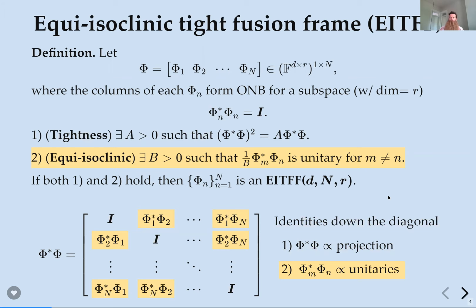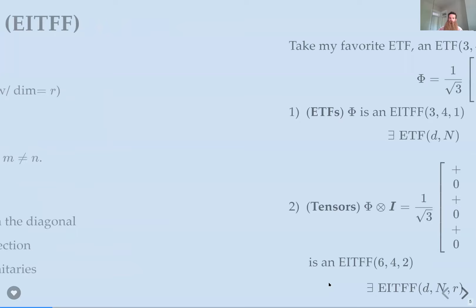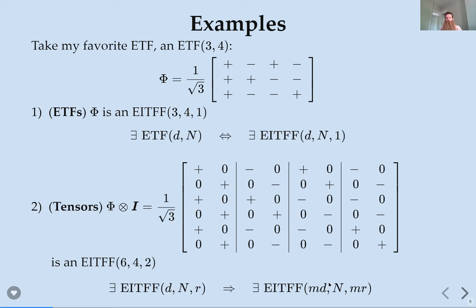I want to build these objects — I can either build the short fat matrix directly or build the Gram matrix and decompose it. Let me show some examples. I'll start with my favorite ETF, the ETF(3,4) — four vectors in three-dimensional space. The totally trivial observation is that an ETF is exactly the same thing as an EITFF but with one-dimensional subspaces, so ETF(3,4) is also an EITFF(3,4,1). In general, all ETFs give EITFF examples with R=1.